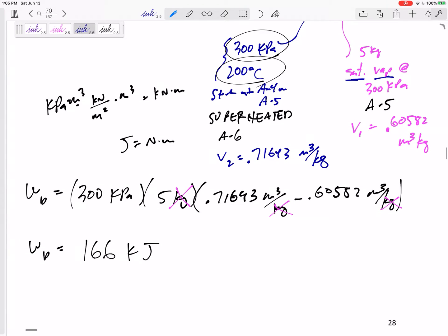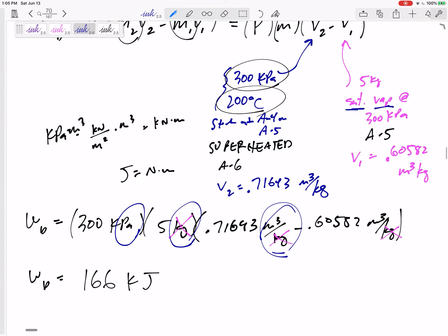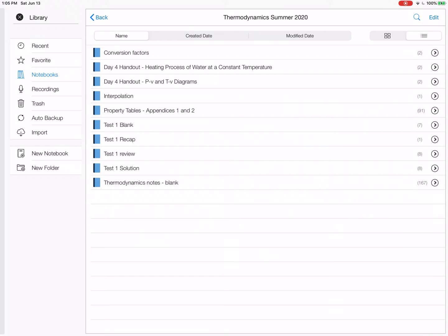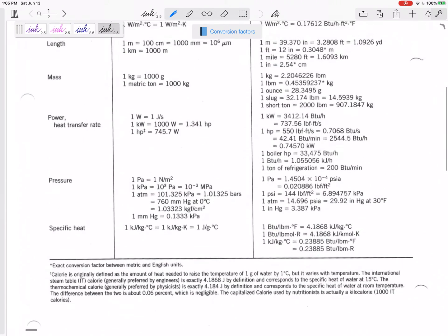So kPa times meter cubed is kilonewton meter. A joule is a newton meter, so this is kilojoules. Generally my line of thinking is when I've got Pa, kilograms, and meters cubed, that's going to be a joule. Something to put in our repertoire: a kPa meter cubed is a kilojoule.